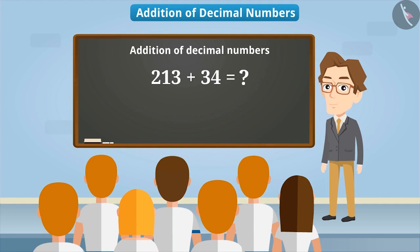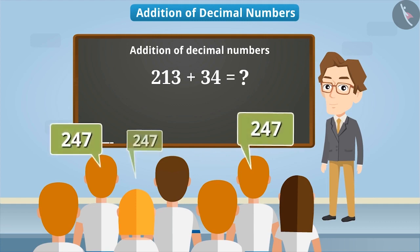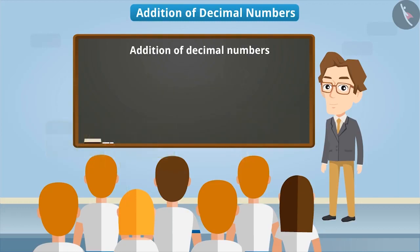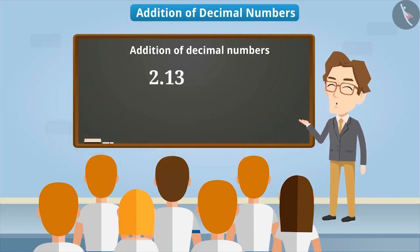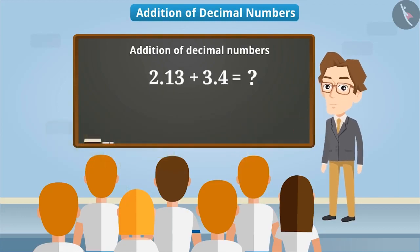The students answered 247 very easily. Everyone was happy that they had answered it quickly. The teacher then asked them, what would be the sum of 2.13 and 3.4? The students started thinking hard as to how they could add these two decimal numbers.